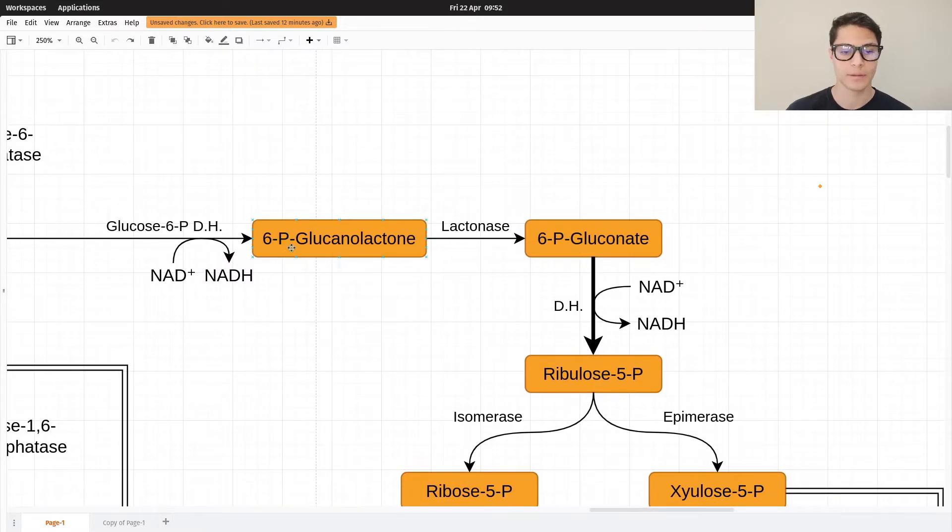Then the 6-phosphogluconolactone gets converted into 6-phosphogluconate via the lactonase enzyme.